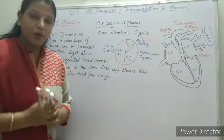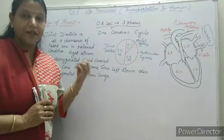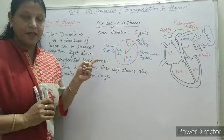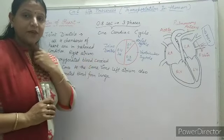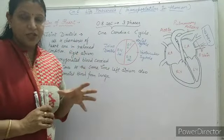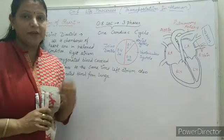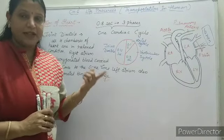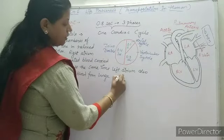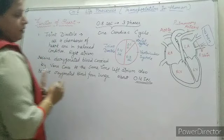At the same time, the left atrium also receives oxygenated blood from the lungs. Right atrium collects deoxygenated blood from the vena cava, which collects blood from all the tissues all over the body — blood that is deoxygenated in nature as all the oxygen is used by the tissues. The duration of this joint diastole is about 0.4 second.